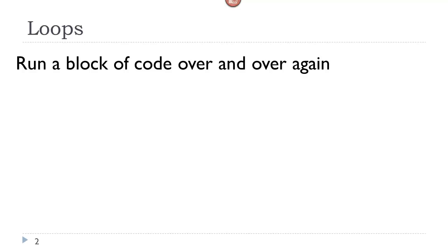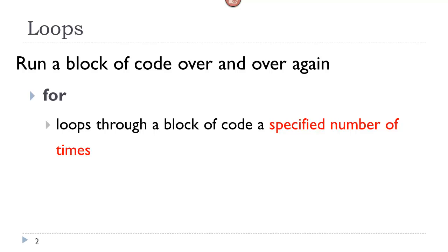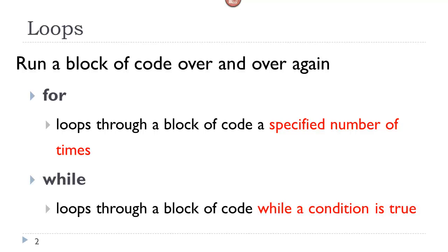A loop is a JavaScript procedure that runs a block of code over and over again. We have two predominant types of loops. One is called a for loop, and a for loop will loop through a block of code a specified number of times. A while loop, on the other hand, will loop through a block of code while a condition is true — as long as that condition is true, it will continue to run.